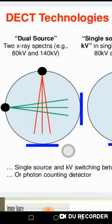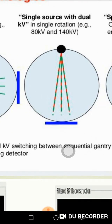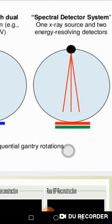With one source alternating between 80 kV and 140 kV, you have data at both energy levels used in image reconstruction. You can also use one source but employ two types of detectors — one detecting at 80 kV and the other at 120 kV. This effectively resolves the X-ray spectrum, and by resolving the spectrum you are able to enhance the quality of the diagnostic image.